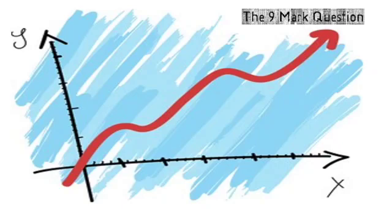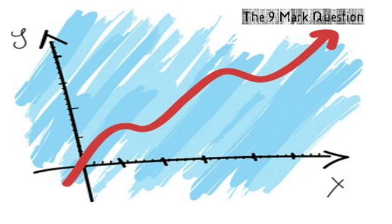This video is for AQA A-level economics and it looks at a very specific type of question found on paper one and paper two: the nine-mark question. Paper one is micro, paper two is macro, and it is the exact same technique, so even though this video will have more of a focus on macro nine-markers, the same technique can be used on paper one as well.